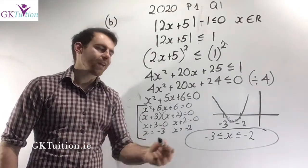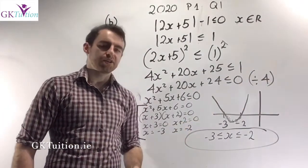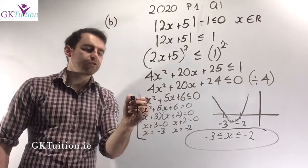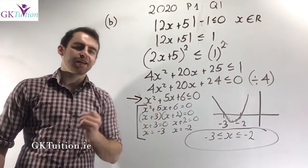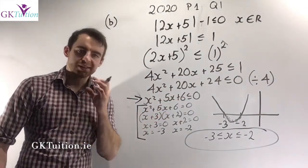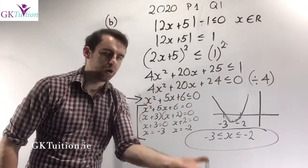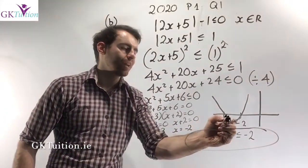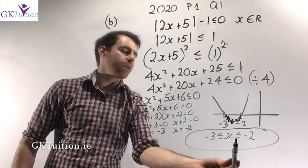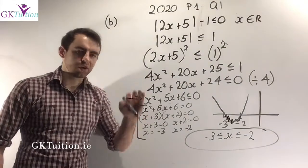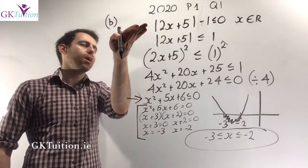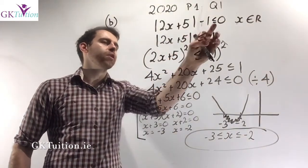The quadratic crosses the x-axis at minus 3 and minus 2. I drew a rough sketch of the quadratic. The quadratic is less than or equal to 0 when the curve is below the x-axis, which occurs between the two roots. So when x is greater than or equal to minus 3 but less than or equal to minus 2, the curve is below the x-axis. That's the final answer: the range of values for which the modulus of 2x plus 5 minus 1 is less than or equal to 0.